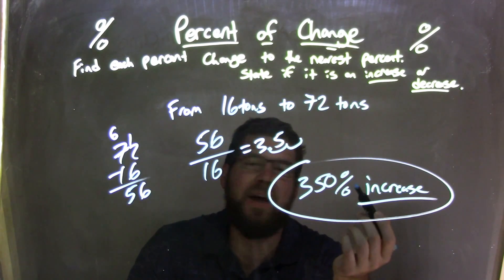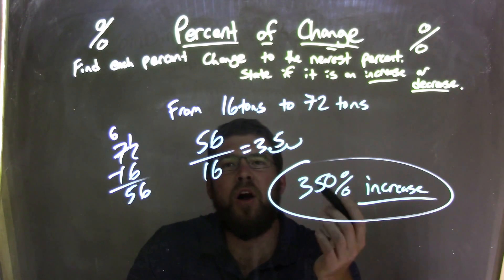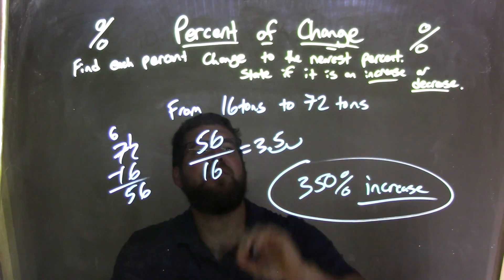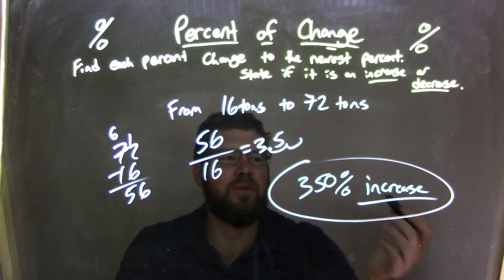We need to convert that to a percent, and 3.5 converts into a 350 percent increase. And so our final answer here, from 16 tons to 72 tons, is a 350 percent increase.